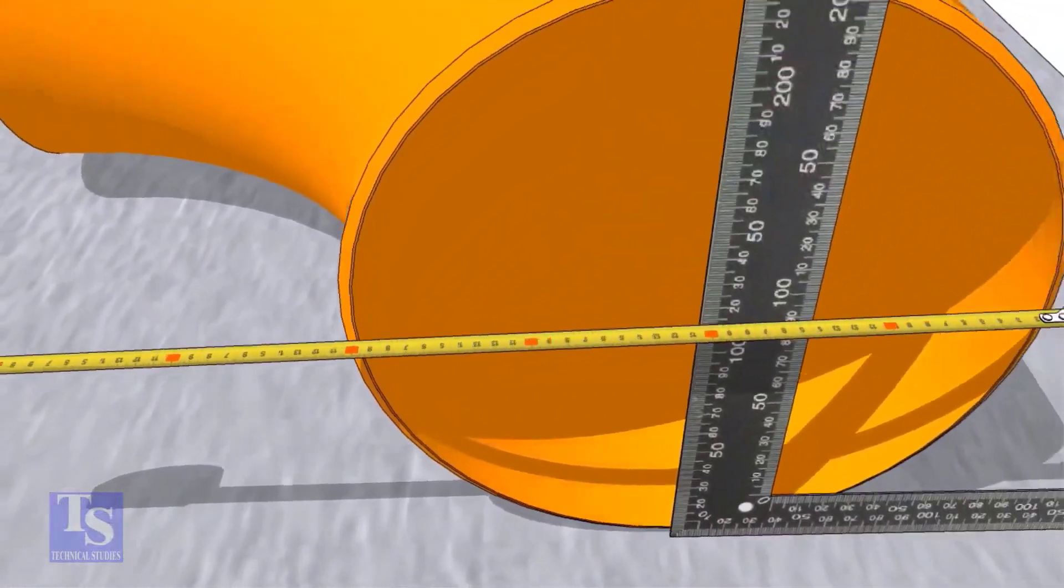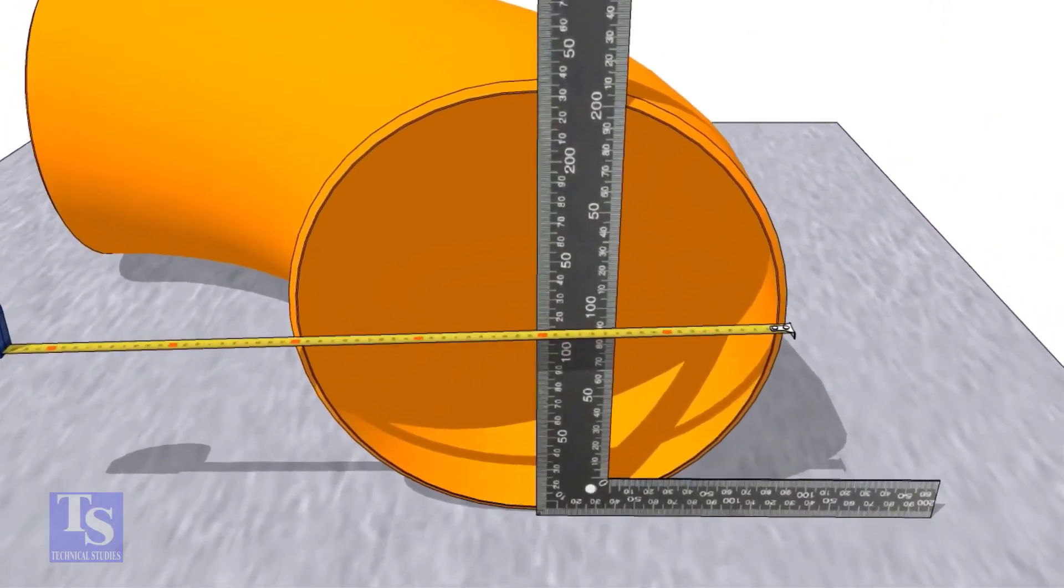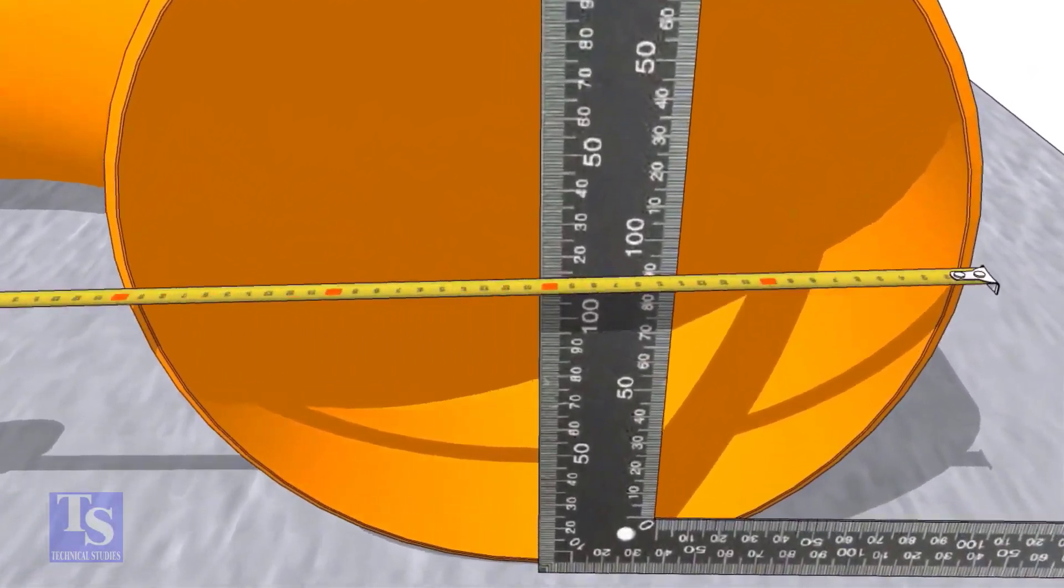Put a right angle at the center of the elbow. Make sure the distance from the edge of the elbow to the face of the right angle is equal.